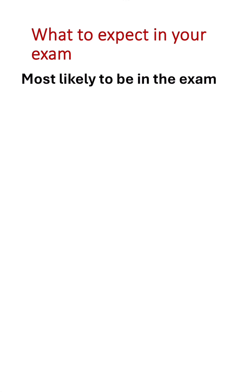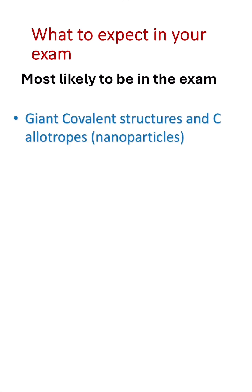There are topics which are most likely to appear this year because they haven't been in the exam recently but are quite common. The first is giant covalent structures and carbon allotropes — this was not in last year's exam, so it is likely to appear this year. If they ask about carbon allotropes, particularly fullerene, they will probably also ask about nanoparticles, so make sure you know this topic well.